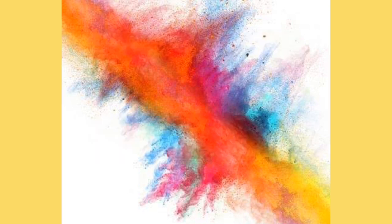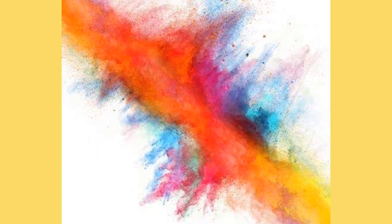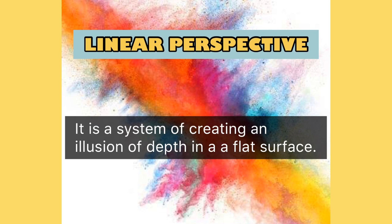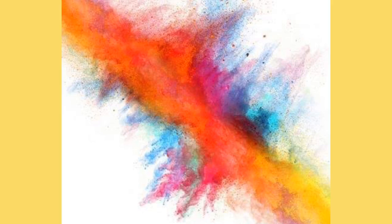Now let's talk about space. Space refers to the area occupied by an object or subject. An illusion of space can be created on a two-dimensional surface using perspective. Perspective is a graphical projection. There are two types: first, linear perspective, which is a system of creating an illusion of depth on a flat surface where all parallel lines in a painting converge at a single vanishing point on the horizon line. The vanishing point is the point where all lines meet.